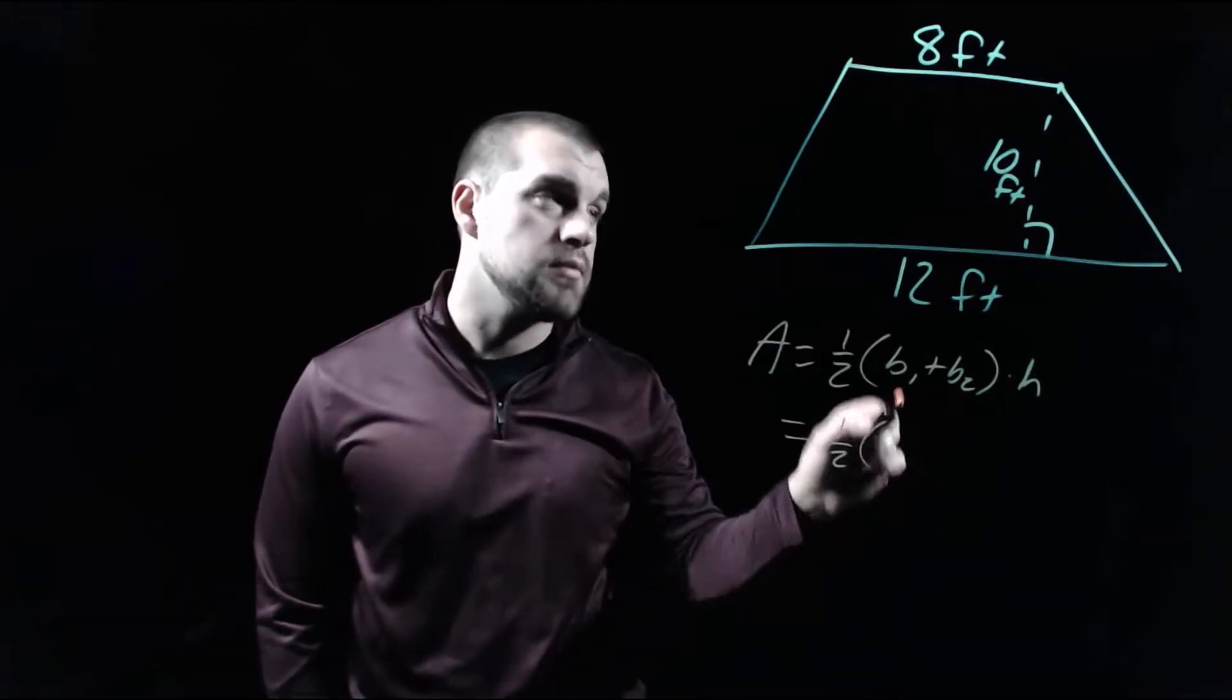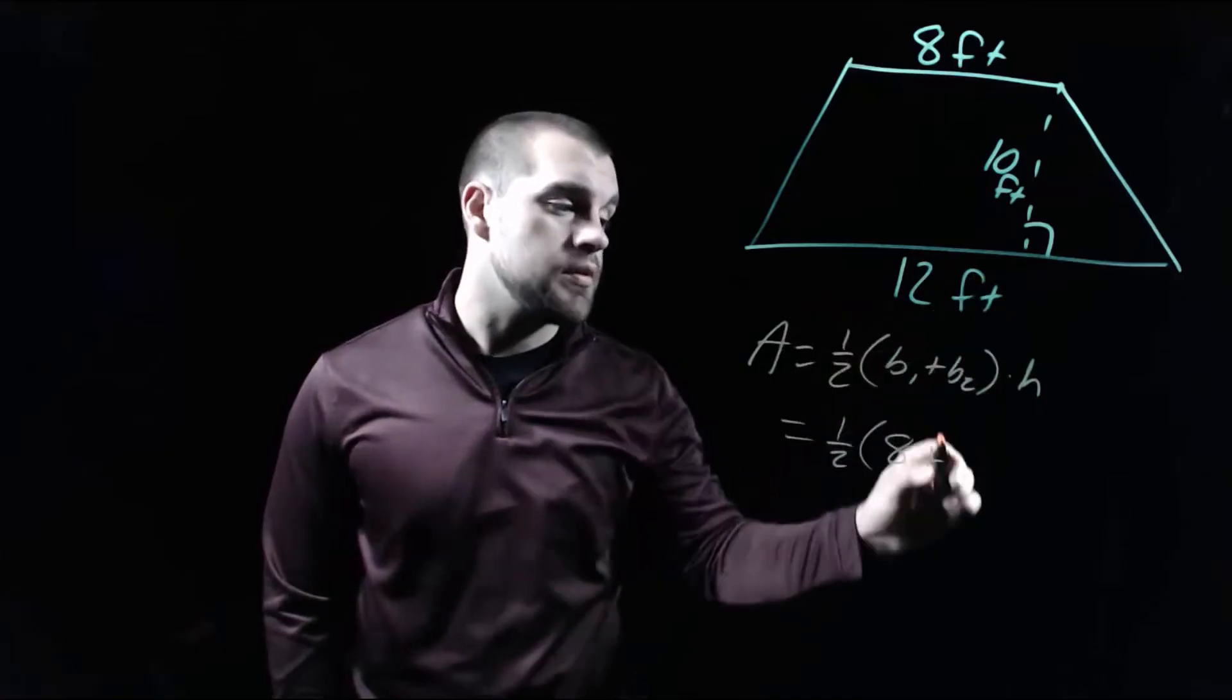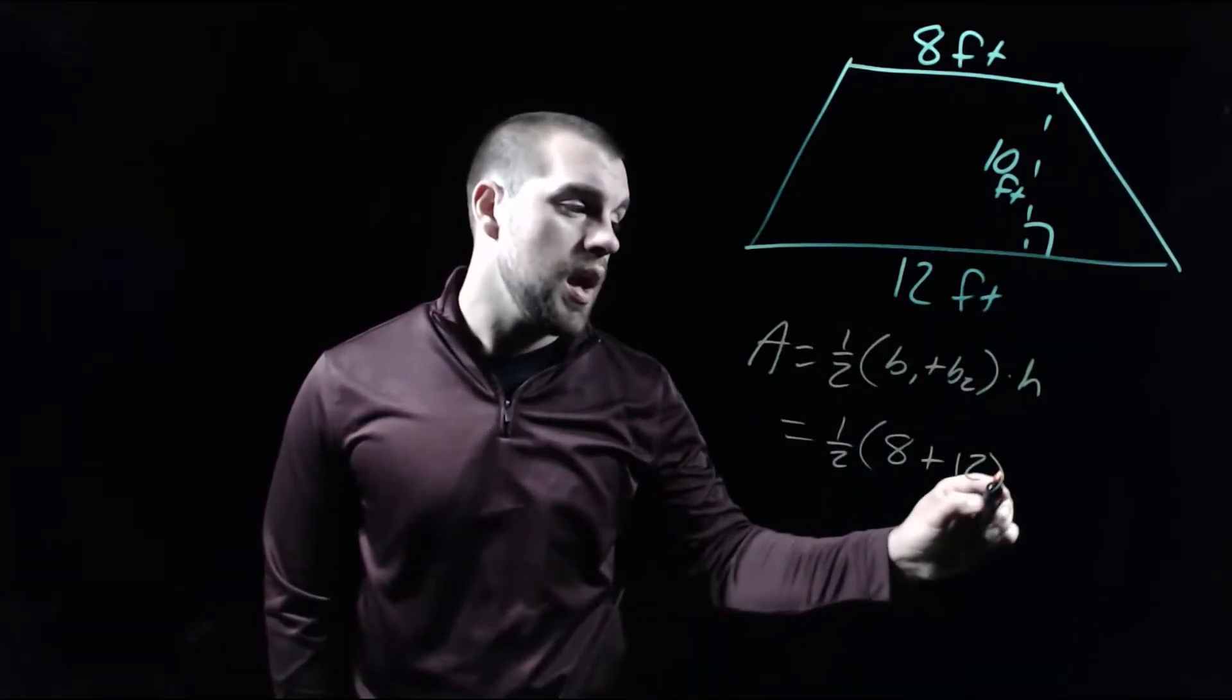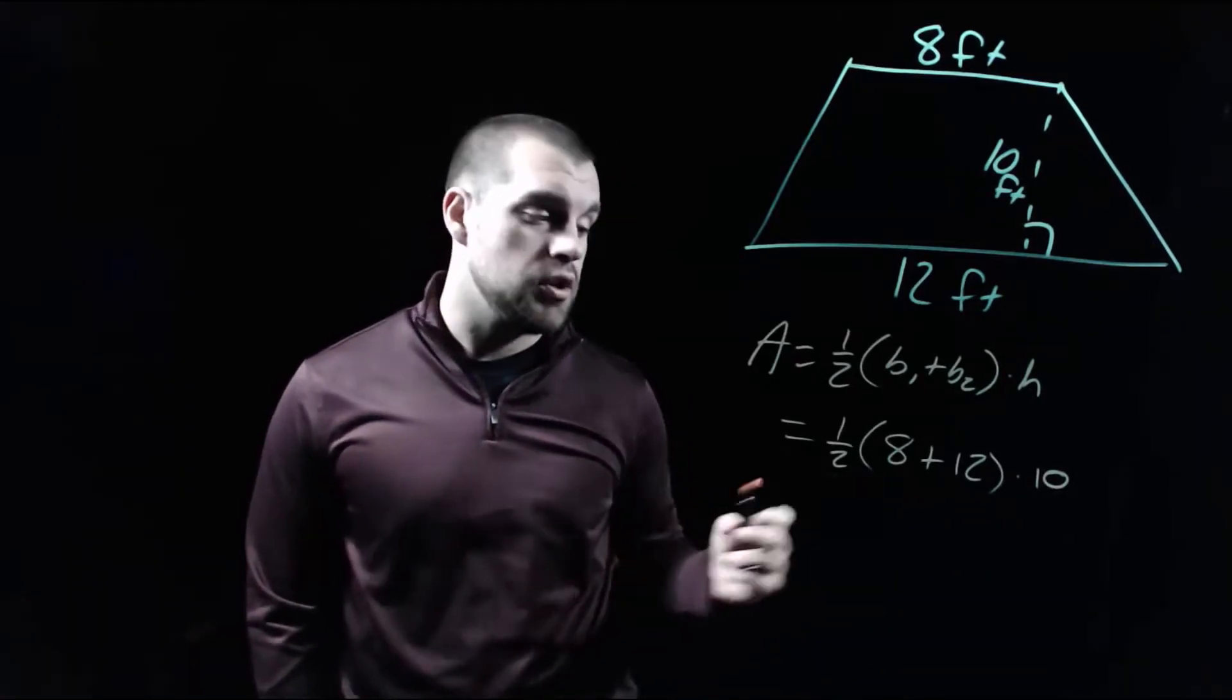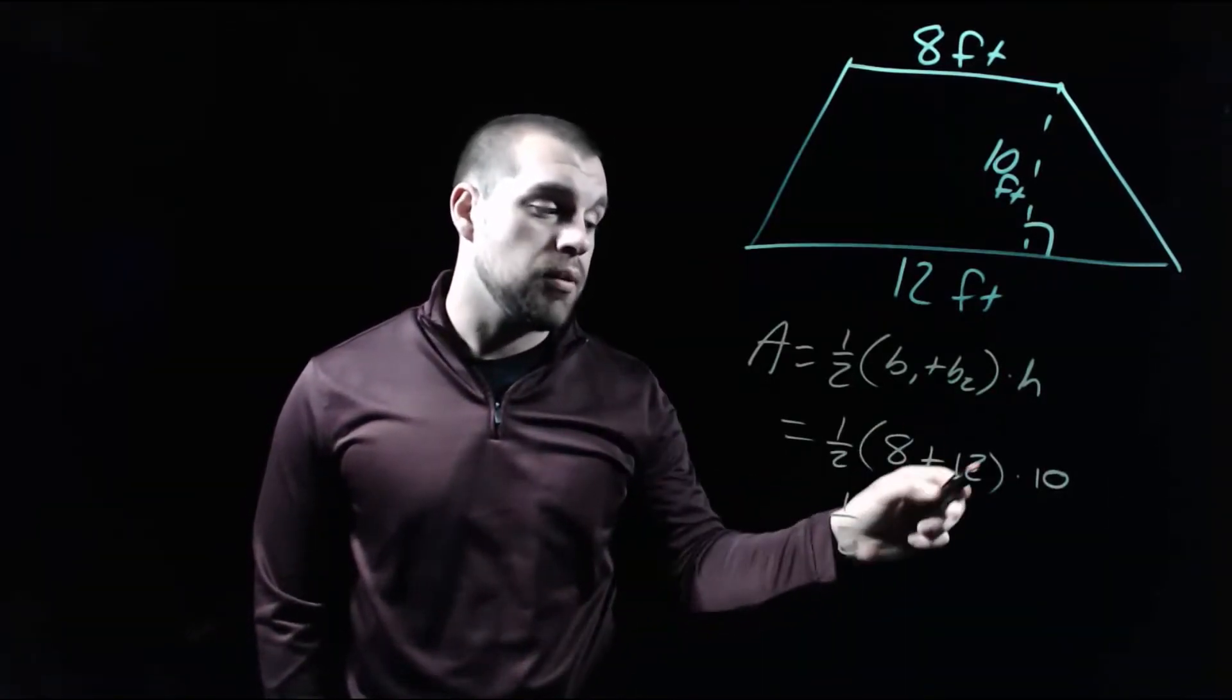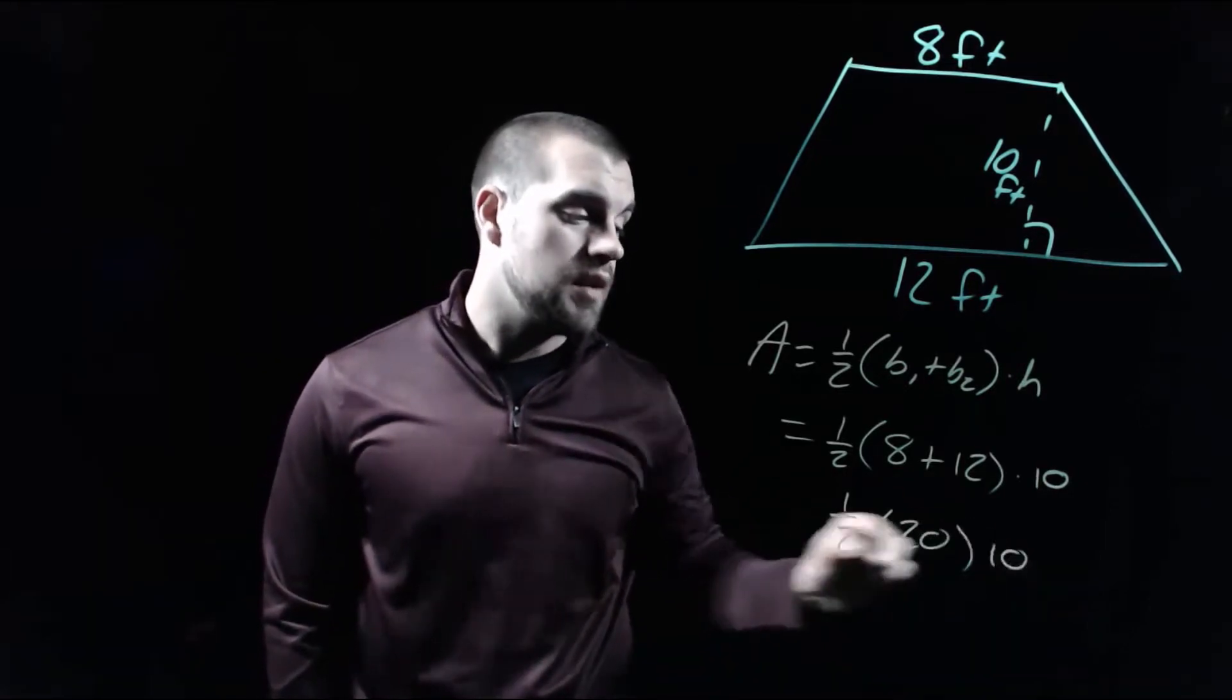So I'm going to do one half times the base across the top is 8 and the base across the bottom is 12, and we want to multiply that by the height, which is our 10 foot length. Now I'm going to take care of this addition first. So if we take 8 plus 12, we get 20. So we have a half times 20 times 10.